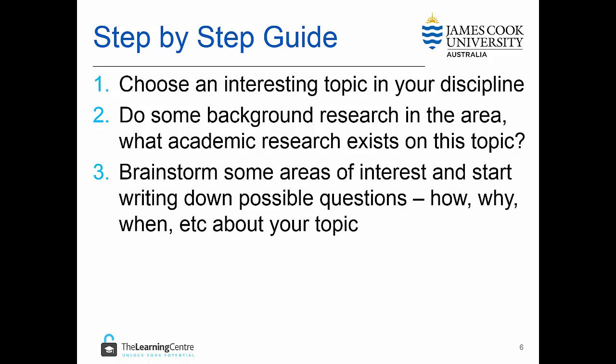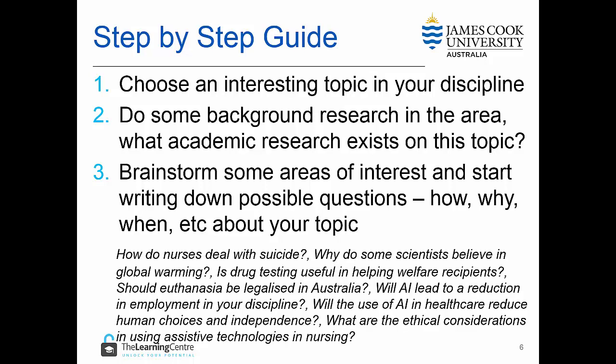After you've done that, brainstorm some of these ideas and start writing possible questions — questions that revolve around how, why, when, who, and things like this. Here are some examples that we might come up with after we've read the literature and started to think about these topics. You can start by formulating a number of these types of questions all around your one area of interest.